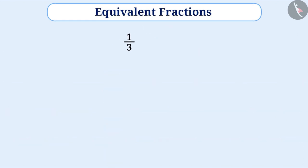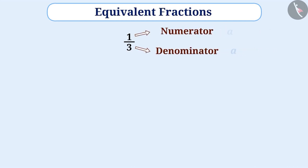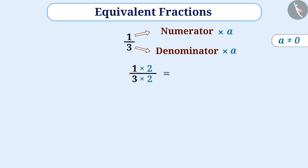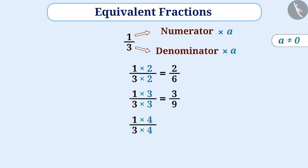One of the ways to find the equivalent fractions of any given fraction is to multiply its numerator and denominator by the same number. For example, multiplying the numerator and denominator of 1 by 3 with 2 will give 2 by 6. Multiplying with 3 gives 3 by 9, and with 4 gives 4 by 12, which are equivalent fractions.